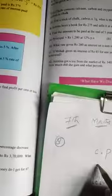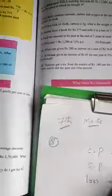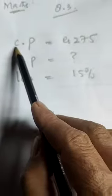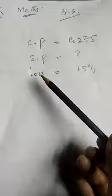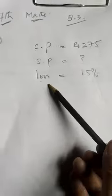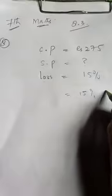We need to find the selling price. Arena's cost price is 275 and the loss is 15%. The loss equals 15% of 275.